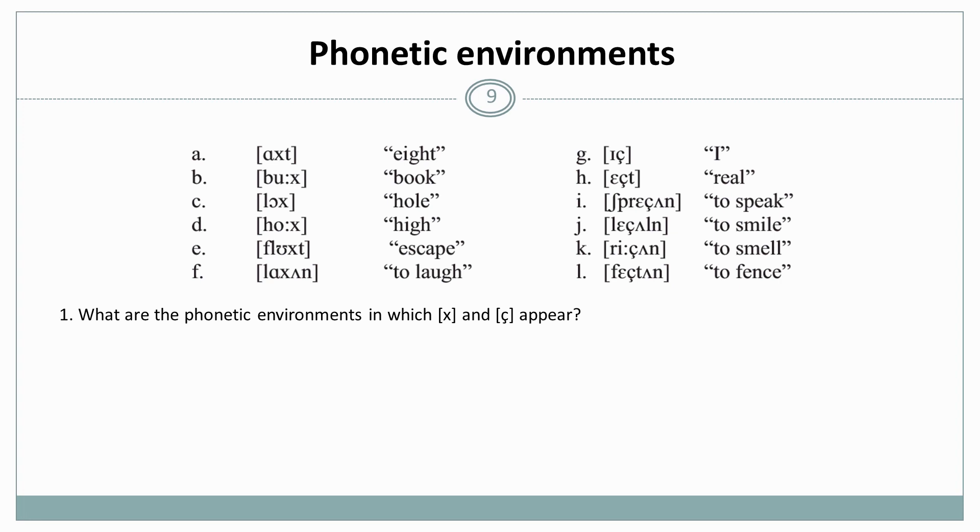So now we can ask ourselves what are the phonetic environments in which x and ç appear. So we find x always occurs after a, u, o, ɔ, or ʊ, and before t, or its word final. And the ç always occurs after i, ɪ, or e, and before t, or its word final again.